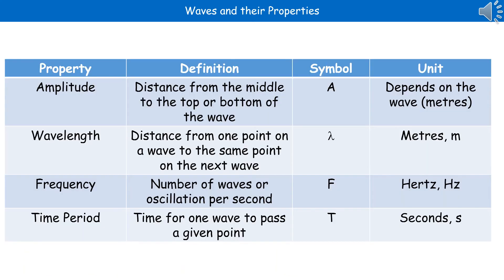There are four terms to know associated with waves. Amplitude is the distance from the middle to the very top or bottom of a wave, measured in metres. Wavelength is the distance from one point on a wave to the same point on the next wave, measured in metres. Frequency is the number of waves or oscillations per second, measured in hertz. And the time period is the time for one wave to pass a given point, measured in seconds.